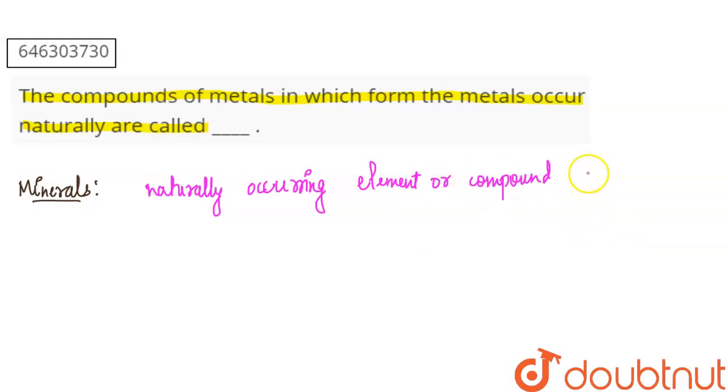Naturally occurring elements or compound, what do you mean? Having an orderly internal structure.